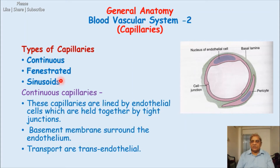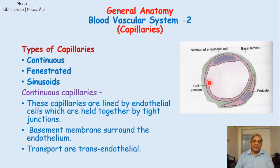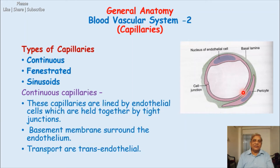Continuous capillaries are lined by endothelial cells — two or three cells may form the lumen. The adjacent endothelial cells are held together by a special junctional complex called a tight junction. Nothing can pass between the two endothelial cells because they are so tightly connected to each other.